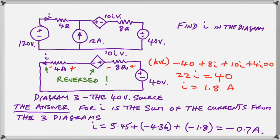So the 5.45 is positive because it's going in the same direction as the arrow in our original diagram. The 4.36 and the 1.8 is negative because the current is flowing in the opposite direction as it did in the problem we're trying to solve. And the answer happens to be negative, 0.7 amps.